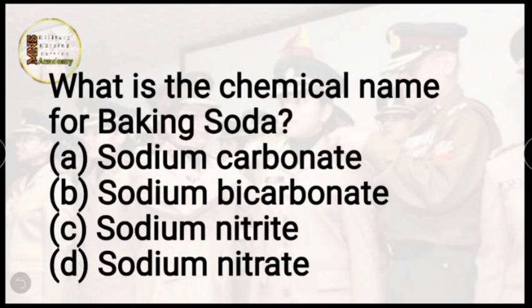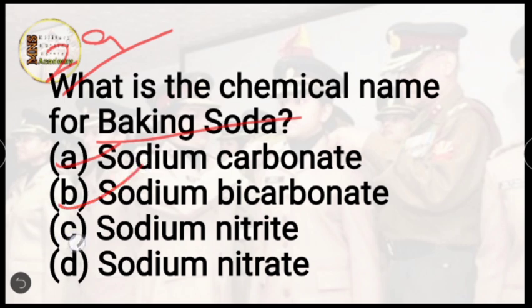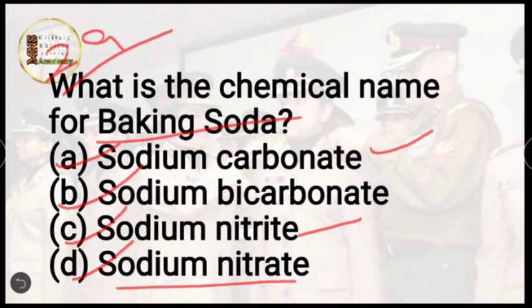Question number 29: what is the chemical name of baking soda? Very easy question. Options are sodium carbonate, sodium bicarbonate, sodium nitrite, or sodium nitrate. The correct answer is option B, sodium bicarbonate, with formula NaHCO3. Sodium carbonate is washing soda with formula Na2CO3. Sodium nitrite is NaNO2, and sodium nitrate is NaNO3.